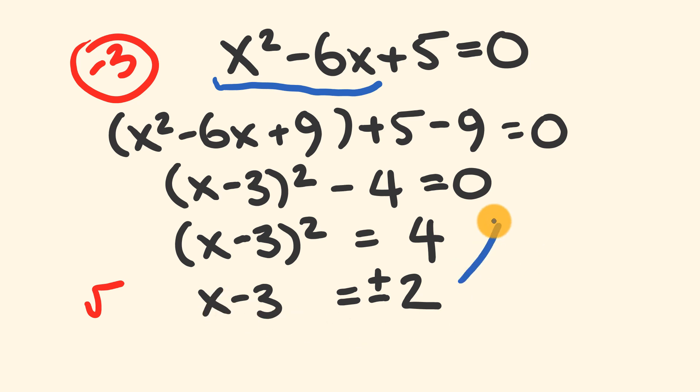Now we can take this further. We have two different equations that are possible. First, we have x - 3 = +2. Or we have x - 3 = -2.